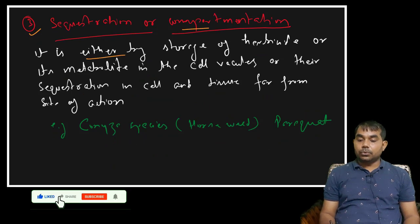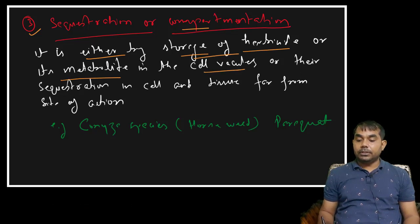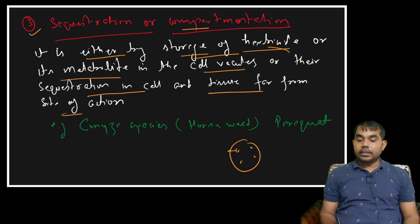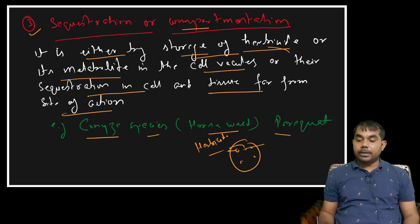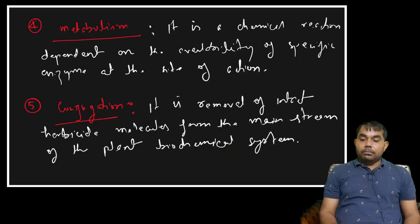Sequestration and compartmentation involves either the storage of a herbicide or its metabolites into cell vacuoles. The herbicide is stored in the vacuoles so that it is sequestered in the cell and tissue away from the site of action — meaning the herbicide never reaches its target, and the weed develops resistance. A very good example is Conyza species (horseweed) developing resistance to paraquat through sequestration and compartmentation.